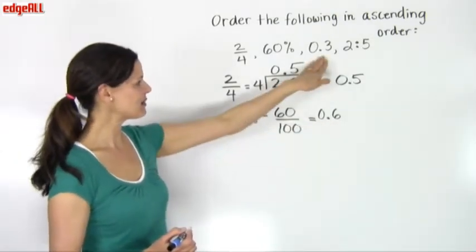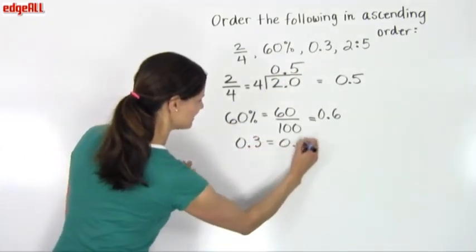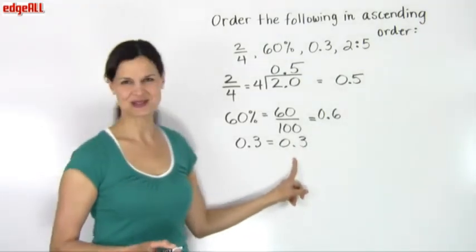And then for my 0.3, I'll just leave it and I'll write it down though so that I don't forget about it. 0.3 equals 0.3, already in decimal form.